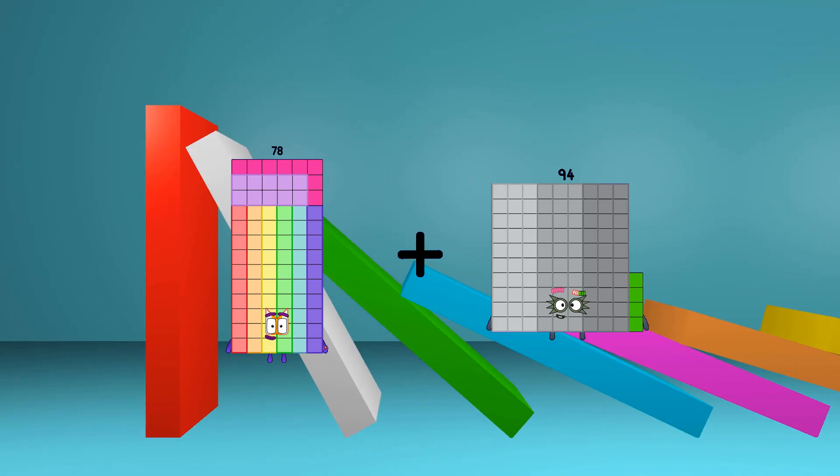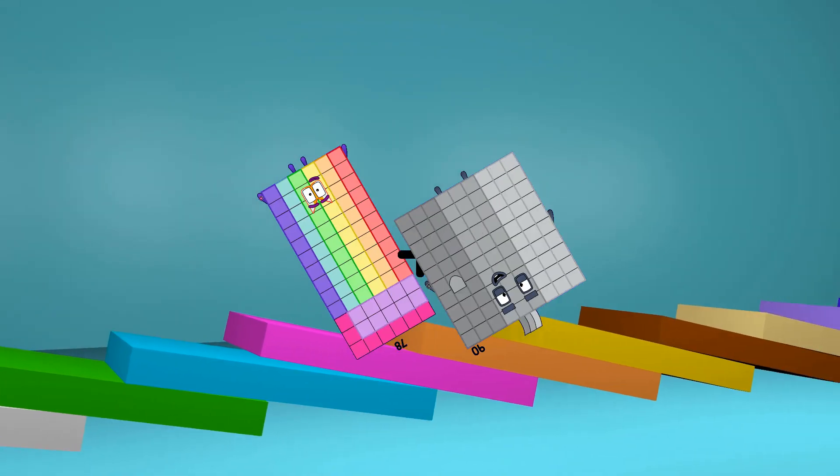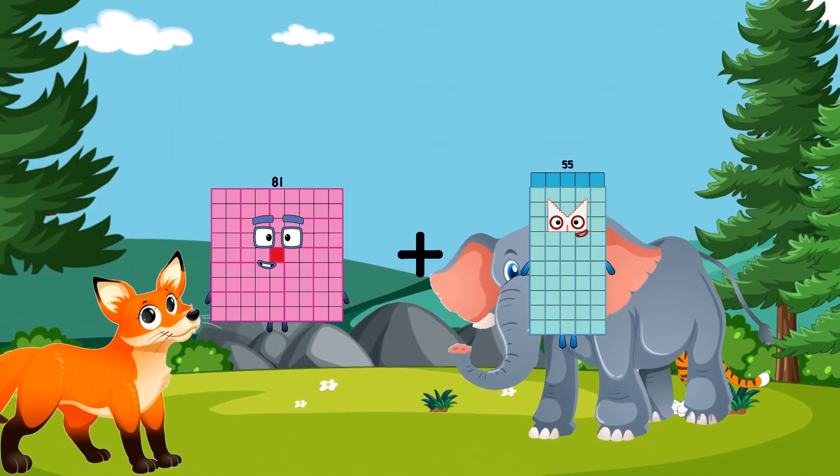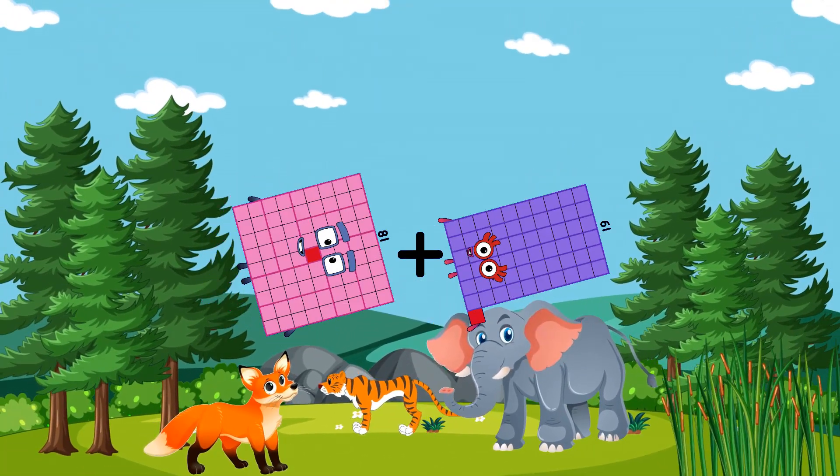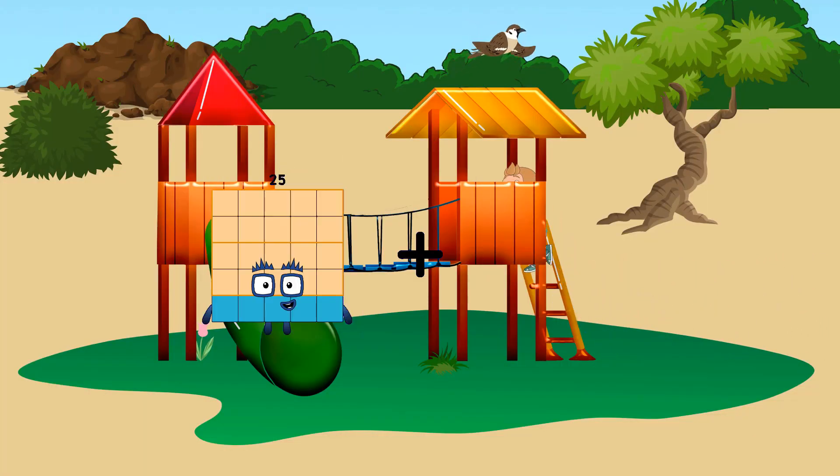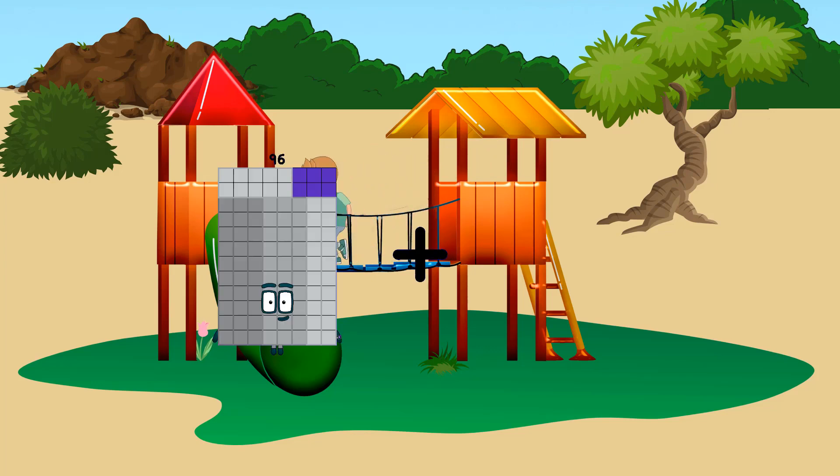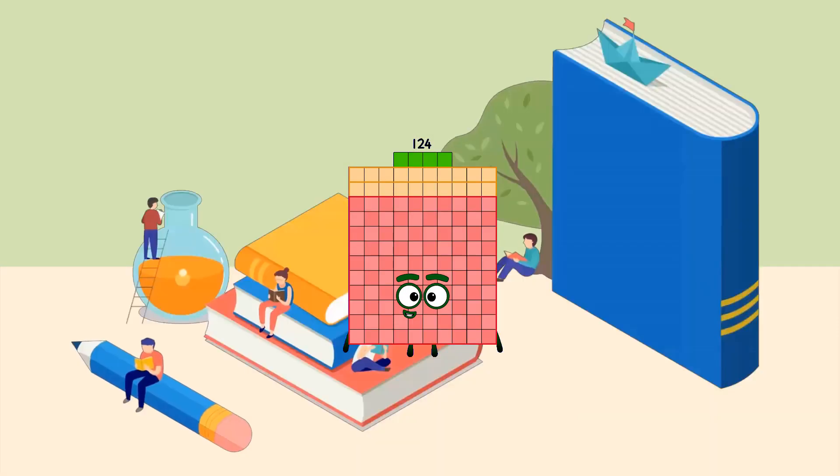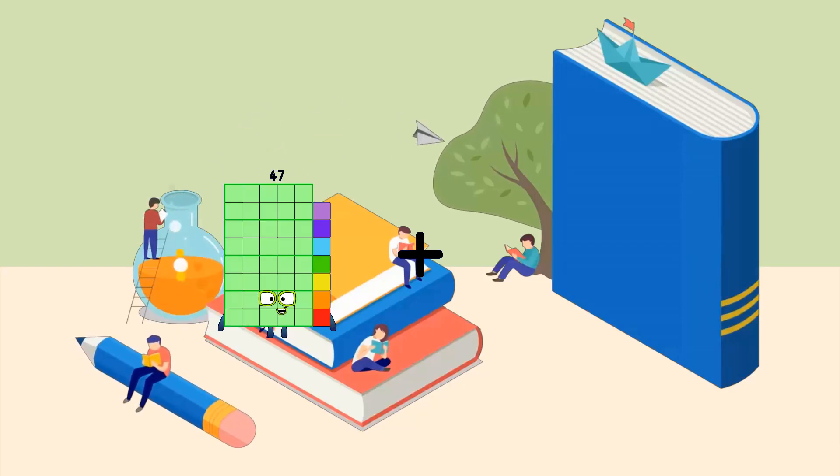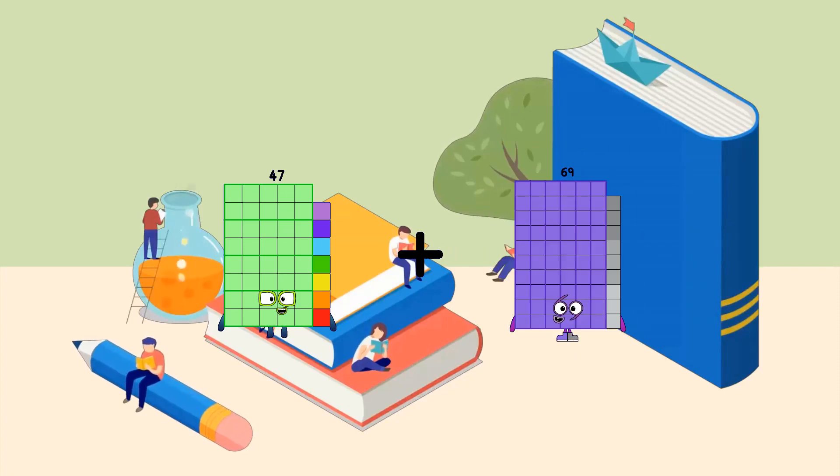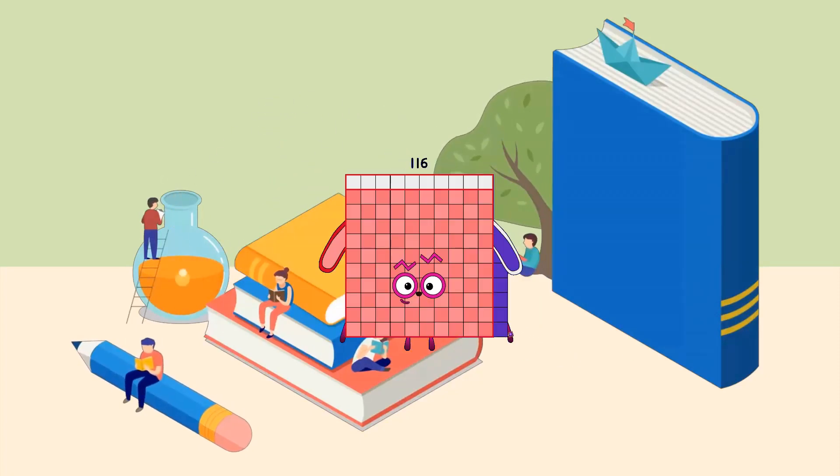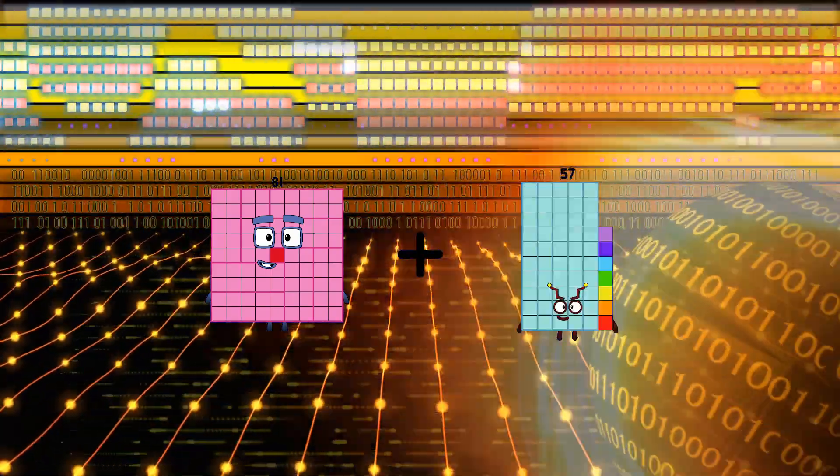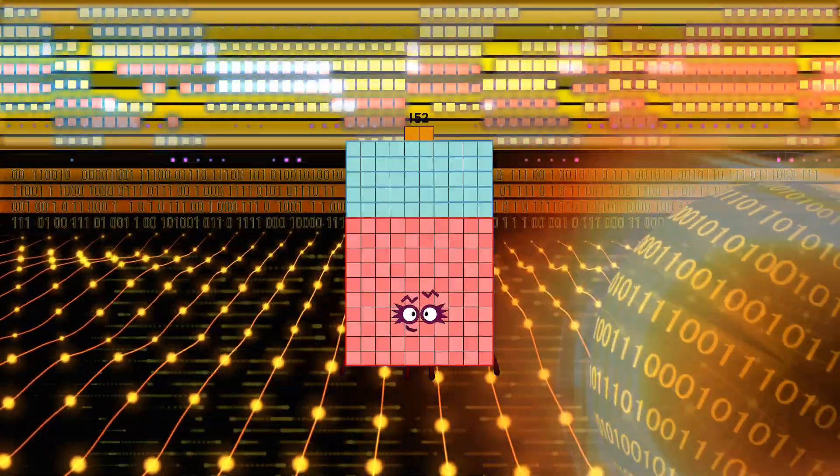78 plus 90 equals 168, 81 plus 61 equals 142, 96 plus 28 equals 124, 47 plus 69 equals 116, 81 plus 71 equals 152.